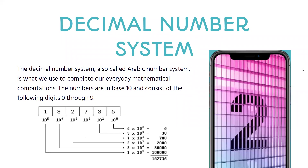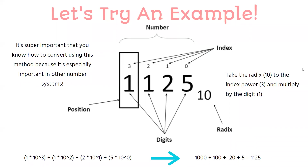Let's talk about the first number system: decimal. This system is also called the Arabic number system, and it's what we use to do our everyday mathematical computations. The numbers are in base 10, and they consist of the digits 0 through 9. Now let's try an example — it's super important that you know how to convert using this method. For the sake of this example, we've taken the number 1125.